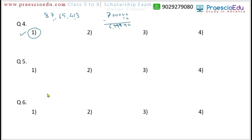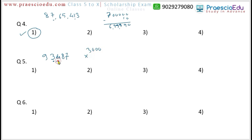Question 5: What is the product of the place values of the digits 3 and 4 in the number 93,487? The digit 3 is at the thousands place, so its place value is 3,000. The digit 4 is at the hundreds place, so its place value is 400. The product is 3,000 × 400 = 12,00,000, which is 12 lakhs. This is given in option number 3.